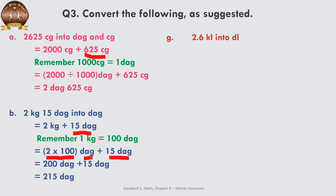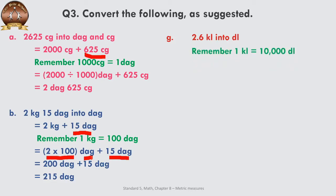The next question: 2.6 kilolitres has to be converted into decilitres. Kilolitre is a bigger unit — simple conversion. The number of steps required are 4: kilo to hecto, hecto to deca, deca to unit, and unit to decilitre. So we multiply by 10,000. Simply do the multiplication by 10,000 and you get 26,000 decilitres as the answer.